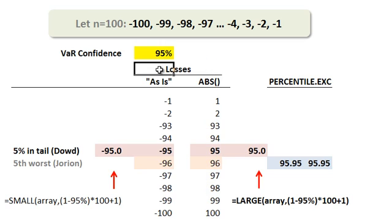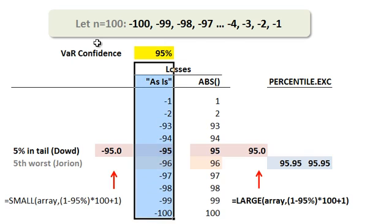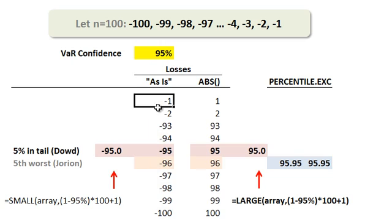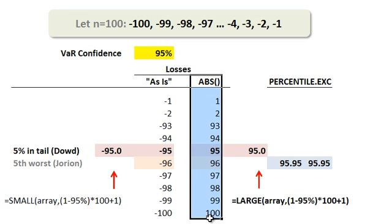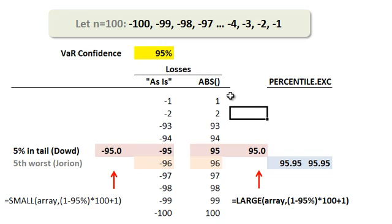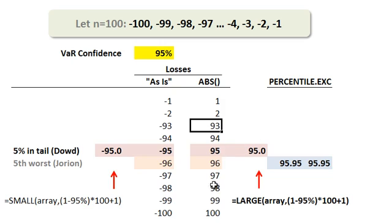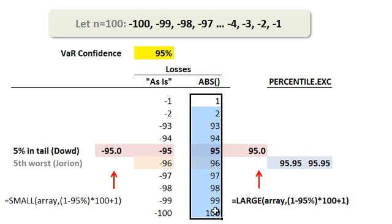To answer the question, I've got two columns here. The first column represents the same ordered loss observations as they are, losses being negative, so the best down to the worst. The second column — how we oftentimes represent them in risk, but which is sometimes confusing to a new learner — is we take the absolute value. So negative one becomes a one, this is a loss of two, a loss of 93, and there's our worst loss at 100, all in absolute value terms.